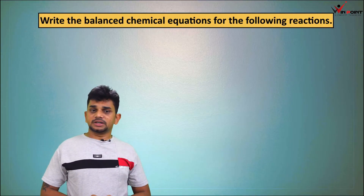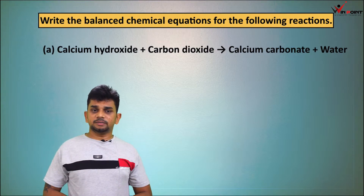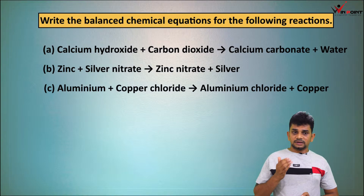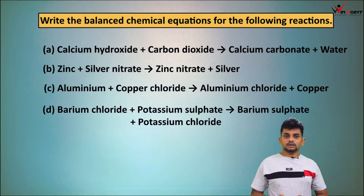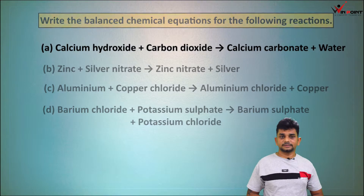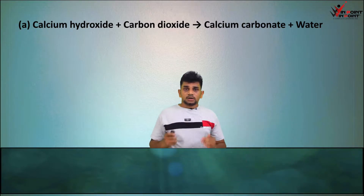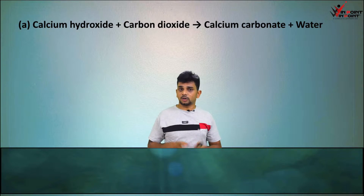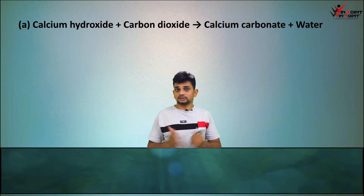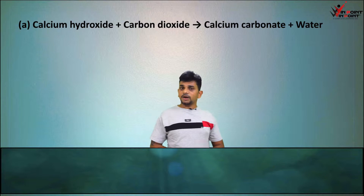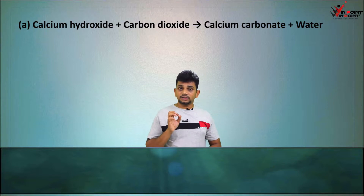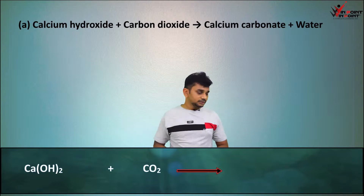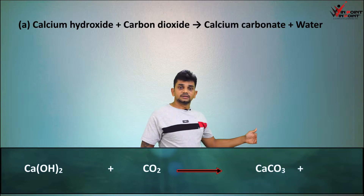Write the balanced chemical equations for the following reactions. First: calcium hydroxide + carbon dioxide → calcium carbonate + water. Second: zinc + silver nitrate → zinc nitrate + silver. Third: aluminium + copper chloride → aluminium chloride + copper. Fourth: barium chloride + potassium sulfate → barium sulfate + potassium chloride. For calcium hydroxide: Ca(OH)2 + CO2 → CaCO3 + H2O.